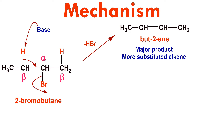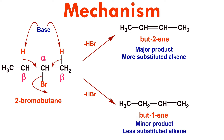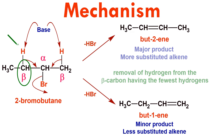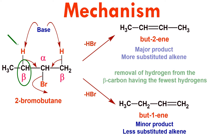On the other hand, the abstraction of hydrogen from the other beta-carbon leads to the lesser substituted product. It is clear that the major product is formed by removing a hydrogen atom from the beta-carbon with the fewest number of hydrogens.